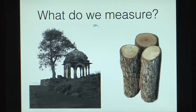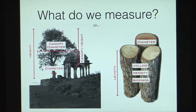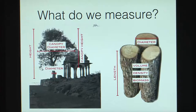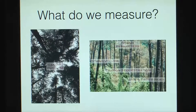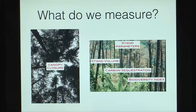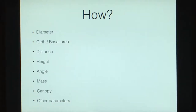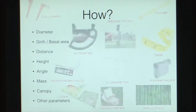In forest biometry, we measure a number of things: canopy diameter, canopy height, diameter of the tree, height of a tree, length of a log, diameter of a log, volume of a log, density, and biomass. We also look at canopy cover and canopy closure, and stand parameters like stand volume, carbon sequestration, and biodiversity index.